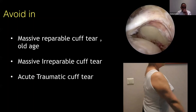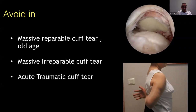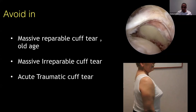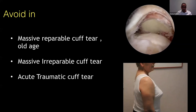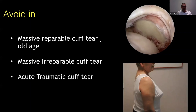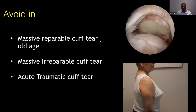I avoid acromioplasty in patients with massive repairable cuff tear, old age, and bad tissue quality — these patients have a high chance of failure, and if you do acromioplasty with CA ligament release, they will end up with antero-superior escape and pseudoparalysis. For the massive irreparable cuff tear where the patient has decent function but mainly pain, we do sub-acromial debridement, biceps tenotomy, and partial repair — in these patients, do not release the CA ligament. In acute traumatic patients there is no need for such a procedure.